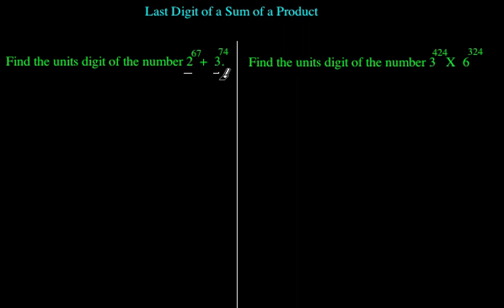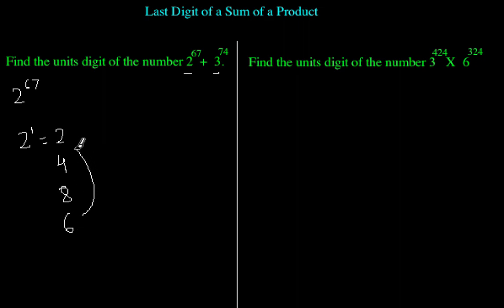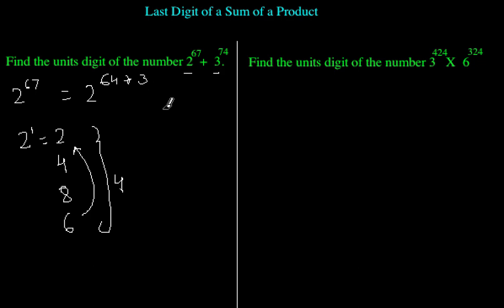For 2 raised to power 67, let's see the pattern: 2 to the 1 is 2, times 2 is 4, times 2 is 8, times 2 is 16, and 6 times 2 is 12, which gives us 2 again. So the cycle length is 4. We write 67 as 64 plus 3. Since 64 is divisible by 4, we can remove it, and the last digit is the last digit of 2 raised to power 3, which is 8.